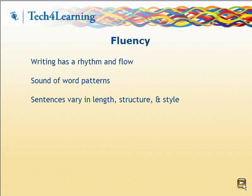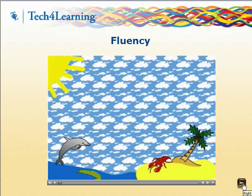Fluency refers to the rhythm and flow of the writing. Pixie and Wixie include a recording feature students can use to record a reading of their text for an oral evaluation of its rhythm and cadence. Often when students trip over words, it is not due to reading ability, but to effective flow. In this video, a student added visuals and narration to a passage they had written. Recording voice can help students better listen for and hear rhythm in their writing.